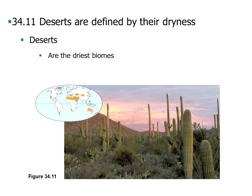Deserts are our next biome. They're defined by their dryness — the deserts are our driest biomes. The deserts tend to occur in two types of places. If you can see their distribution along the latitude of the earth, they tend to occur between the tropics and between the temperate zones, where large masses of dry air descend over the continents. They also tend to occur behind large mountain ranges, in what we call the rain shadow.